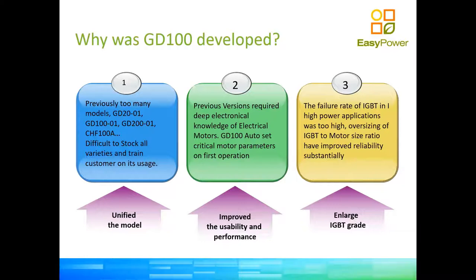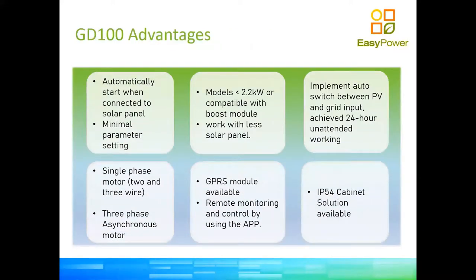The failure rate of an electronic component is proportional to the temperature at which it runs, which is proportional to current. With additional IGBTs, the current per device is reduced, keeping them cooler so the unit can operate in an enclosed device without excellent refrigeration. This gives the inverter a very wide and good operating temperature range, hence a much bigger warranty. That is the reason the GD100 was preferred over previous model generations of pump inverters.